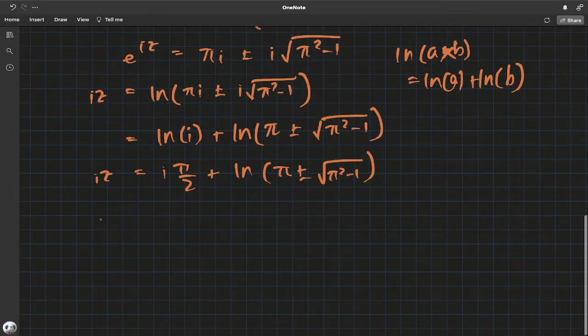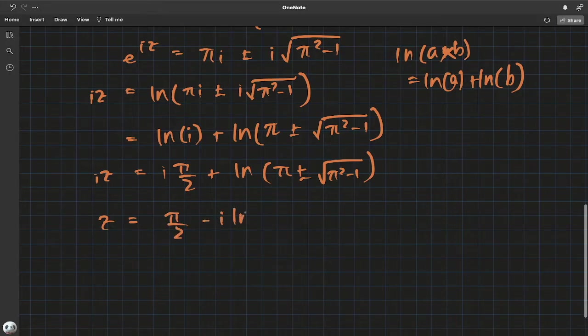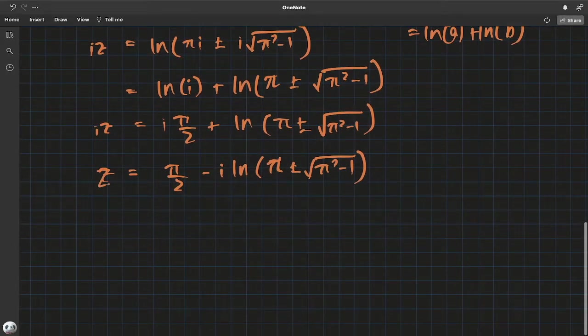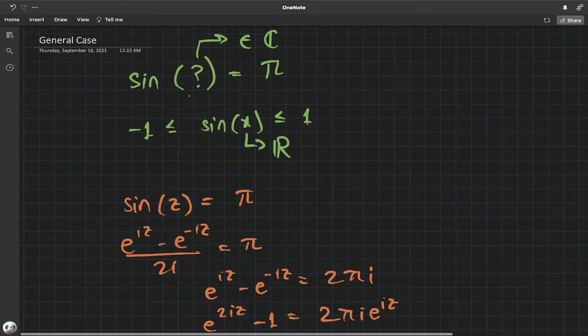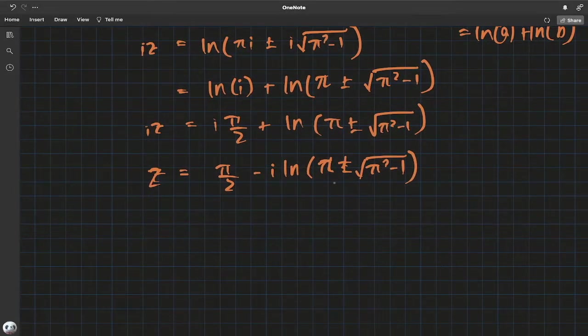So divide by i on both sides because we are solving for z. We have π/2 minus i, because one over i is negative i, times natural log of π plus or minus square root of π² - 1. And that should be the value of z. Take either plus or minus, that gives you, if you plug that into this, π. You can test that if you want, but this is the complex number, this is the value.